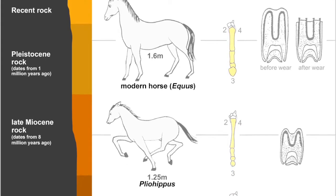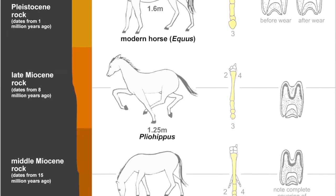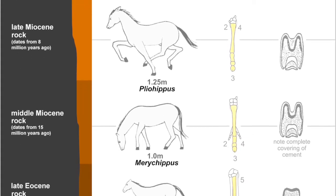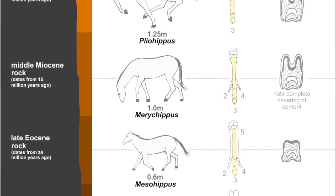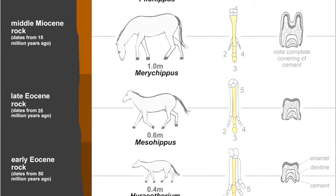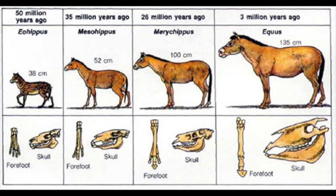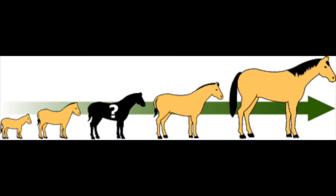As fossils are found in different layers, they create visual evidence that shows gradual changes over time, where there are changes with the species but still retaining former characters. The fossil record remains incomplete, but the similarities and differences can still be observed and measured.